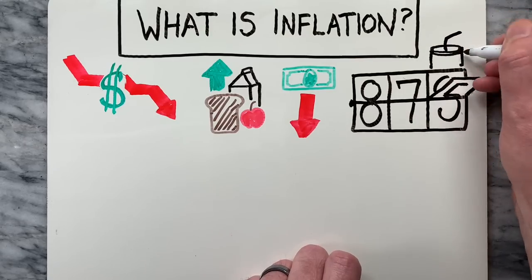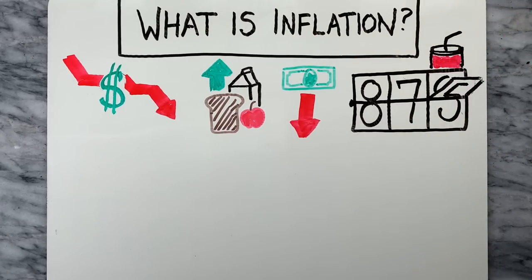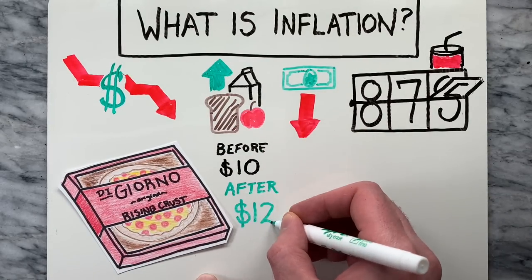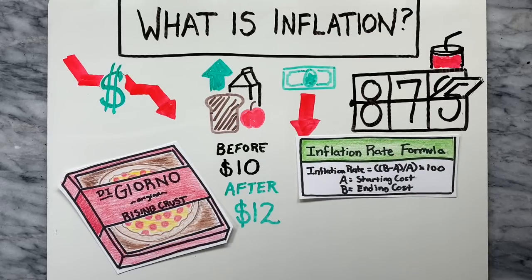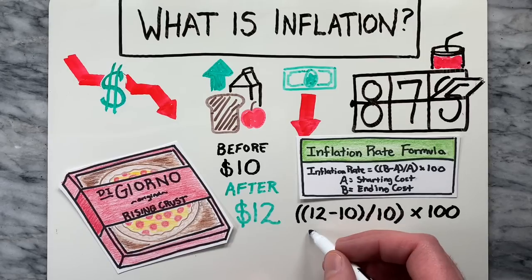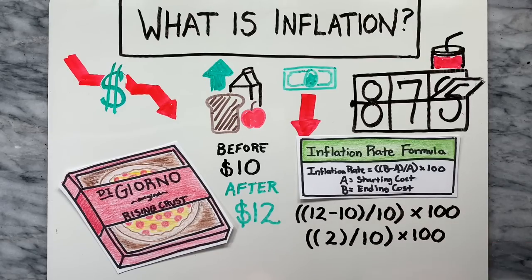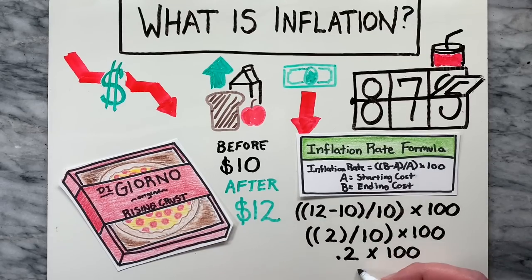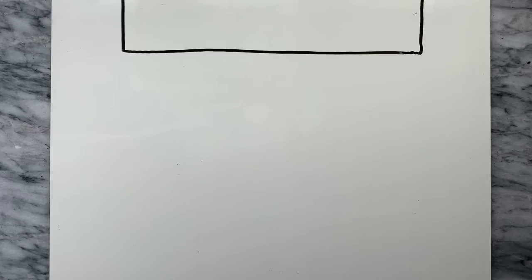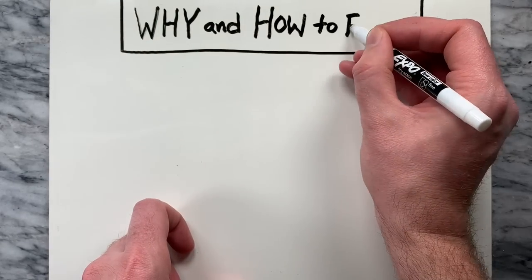Let's take a look at a simple example. Say you go to buy a frozen pizza that used to cost $10, but over time the cost rose to $12 for the same pizza. You can calculate the inflation rate by subtracting the starting price from the later price, divide it by the starting price, and then multiply the result by 100 to get the inflation rate percentage. In this example, you can see that the inflation rate percentage is 20%.